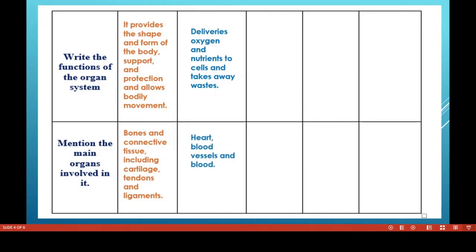The heart helps to pump the blood. Blood vessels are of 3 kinds: arteries, veins, and capillaries — they are tubes which carry blood to various parts of the body. Blood is a connective tissue fluid made up of 2 important components: plasma and blood cells.